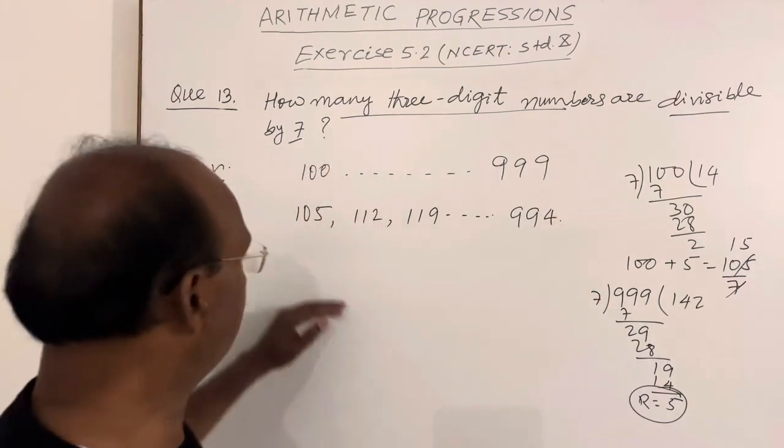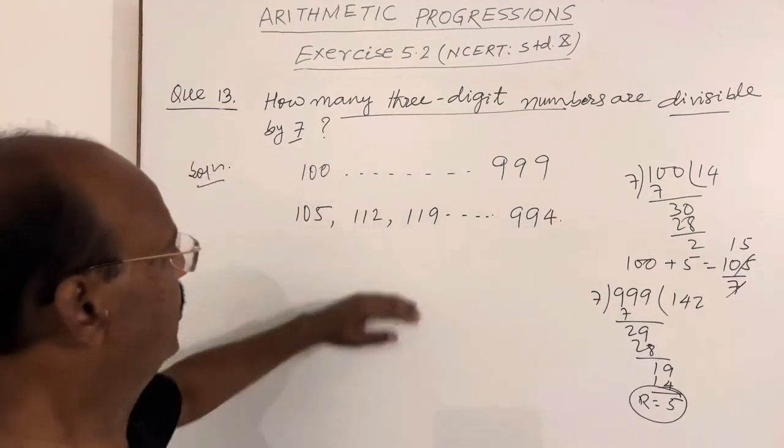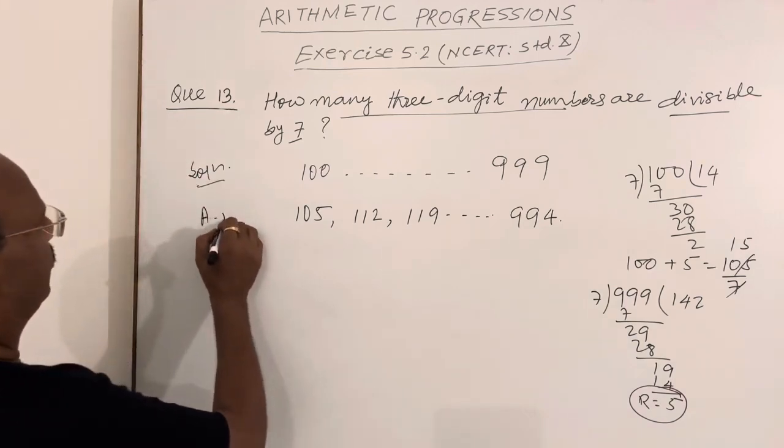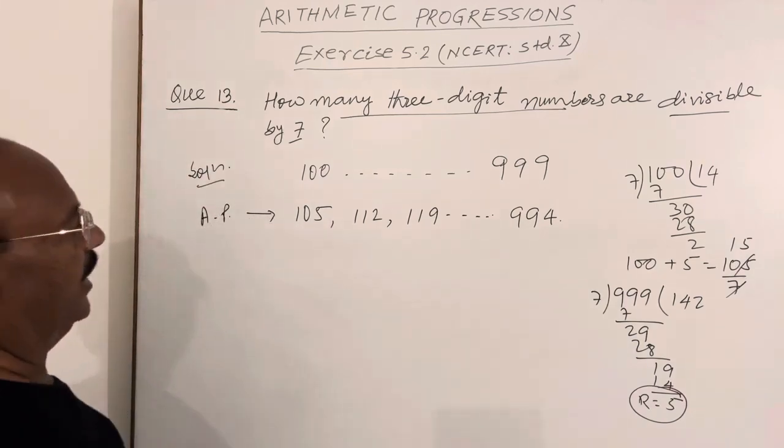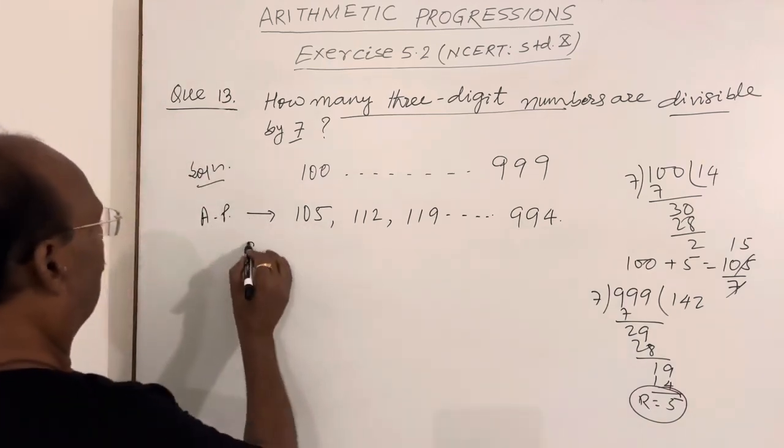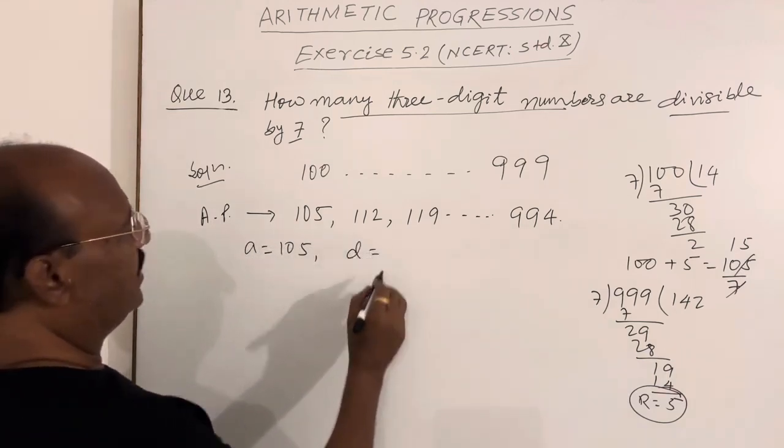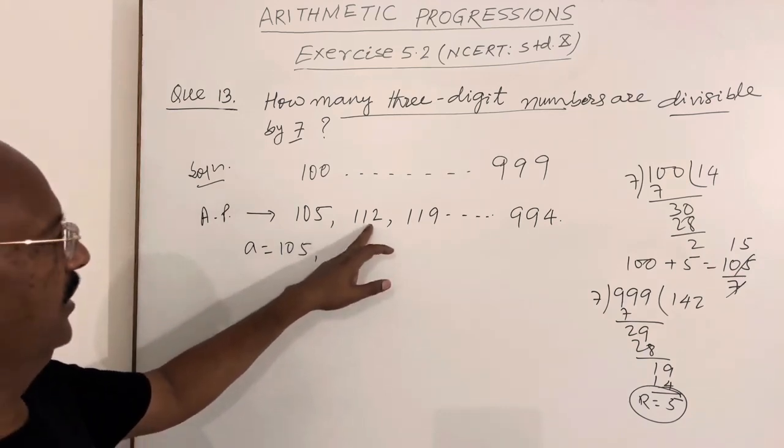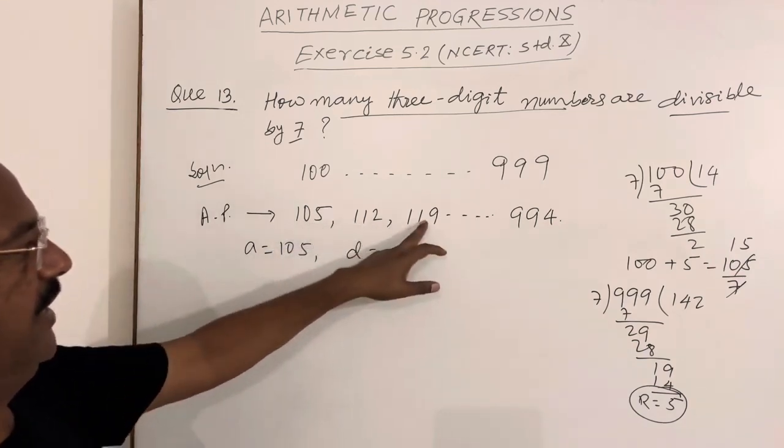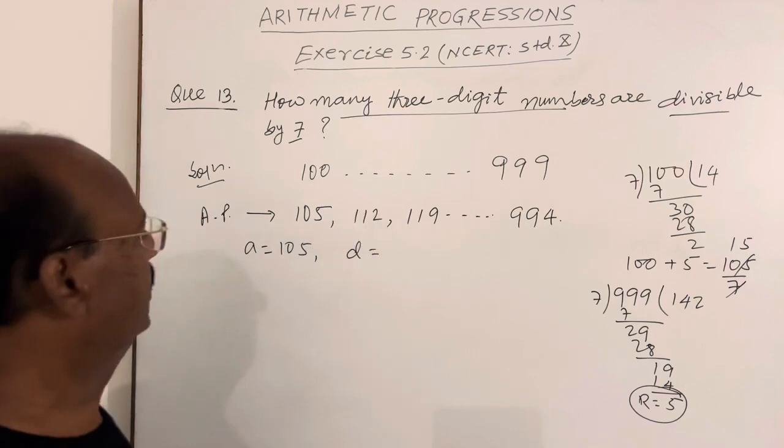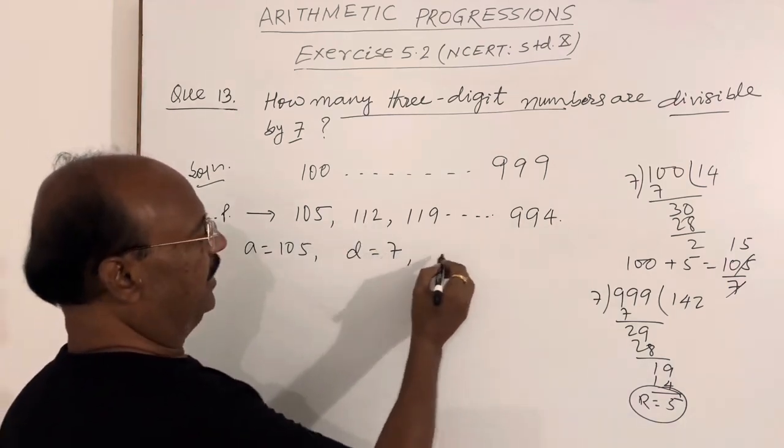Now you see, very interestingly, it becomes an arithmetic progression having first term a equals 105 and common difference d equals 7. 112 minus 105 is 7, 119 minus 112 is 7. The common difference is 7.